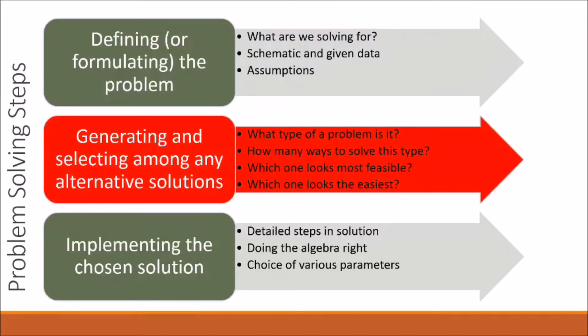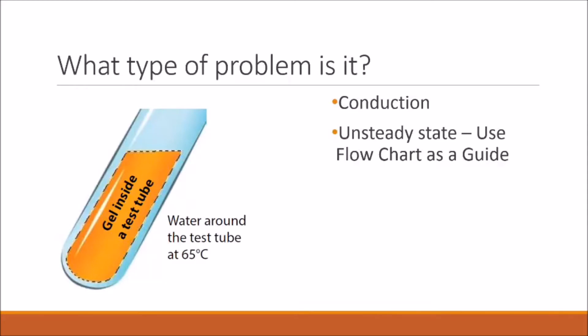Our next step is to generate a solution to this problem. This problem deals with a water bath held at 65 degrees Celsius and gel held at a temperature of 27 degrees Celsius, or initially at 27 degrees Celsius. The gel is immersed in this water, and because there's a temperature gradient between the water and the gel, heat is being transferred into the tube through conduction.